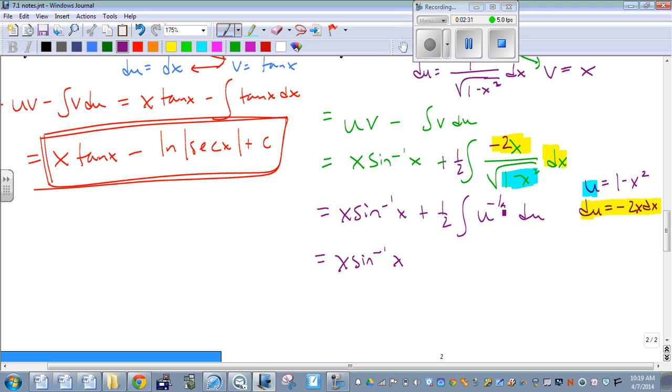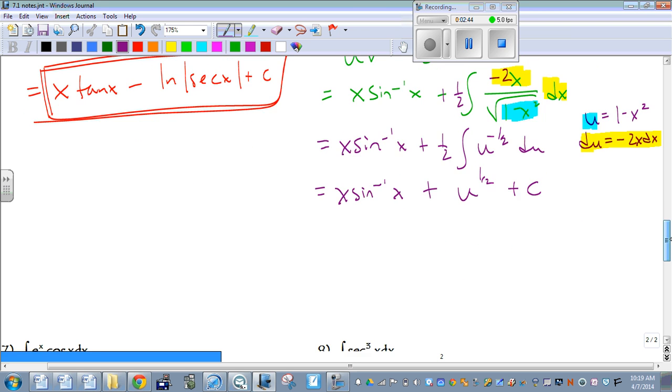So antiderivative of u to the negative 1 half, we're going to add 1 to the exponent, so it becomes u to the 1 half. And then multiply by the reciprocal of this new exponent, so 2 times the 1 half, that's just going to give us 1. We need to remember our plus c.